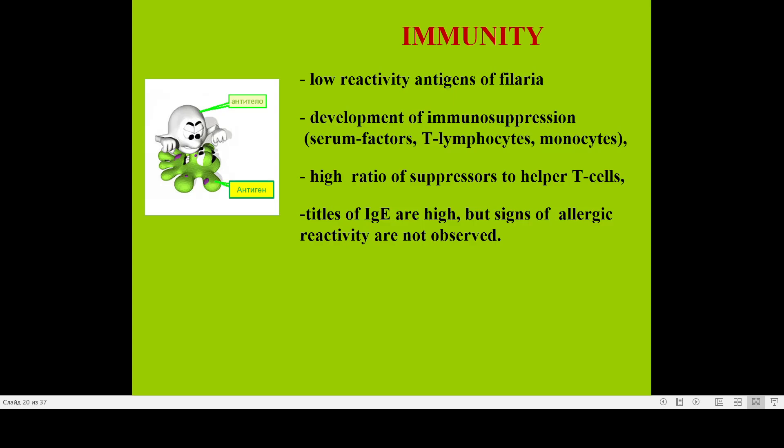Regarding immunity: on one side, there is a high titre of immunoglobulin E; on the other side, there is low reactivity to antigens of filaria. This is associated with development of immunosuppression — typical for different helminthic diseases, as it is necessary for the effective survival of the helminths.